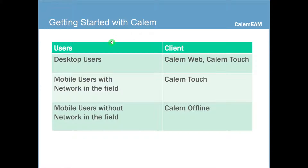To get started with Calum, you can pick a client that you'd like to use, depending on how you're going to use Calum. If you're a desktop user, you can choose Calum Web or Calum Touch. If you're a mobile user, you'll mostly choose Calum Touch. If you're a mobile user without a network in the field, Calum Offline would be your choice.